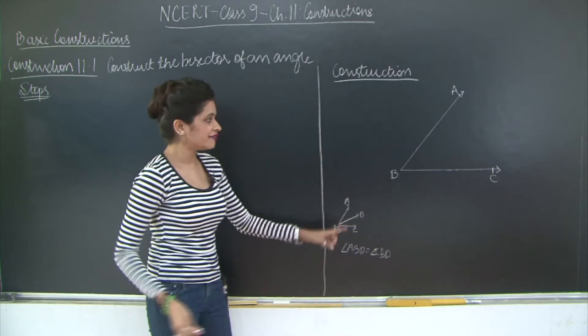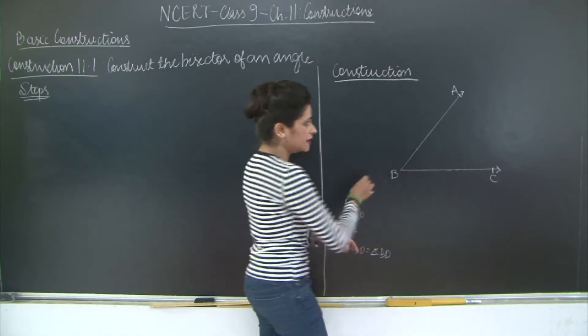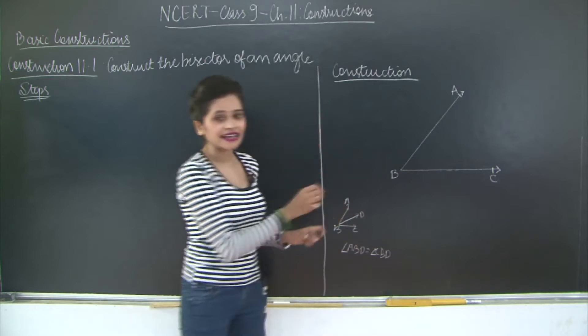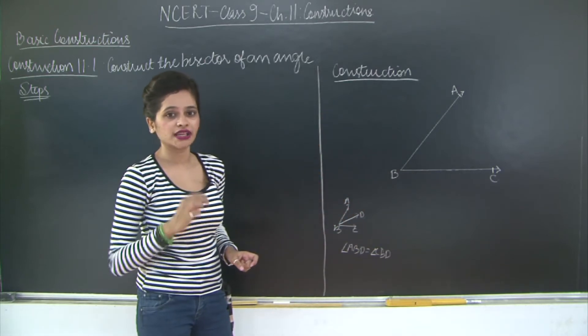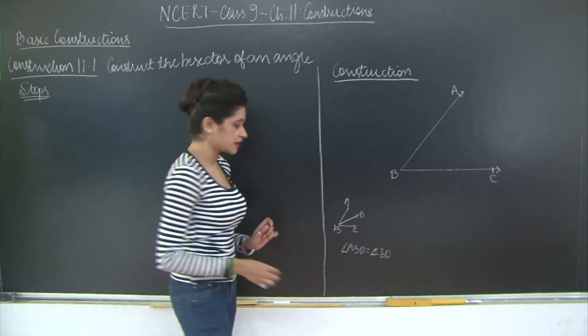So this ray should divide angle ABC. Ray BD when we draw it should divide the angle ABC into two equal angles. So let us get started with the construction.